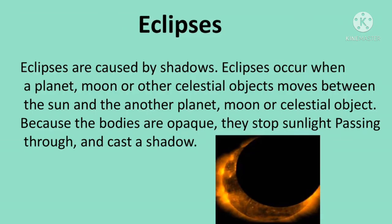Eclipses are caused by shadows. They occur when a planet, moon, or other celestial object moves between the sun and another planet, moon, or celestial object. Because the bodies are opaque, they stop sunlight from passing through and cast a shadow. An eclipse happens when a planet or moon gets in the way of the sun's light. Here on Earth, we can experience two kinds of eclipses: solar eclipses and lunar eclipses. A solar eclipse happens when the moon gets in the way of the sun's light and casts its shadow on Earth.